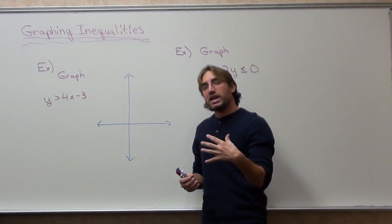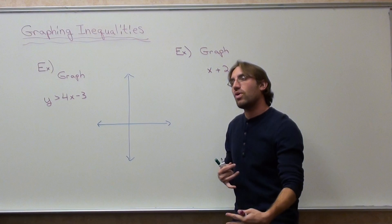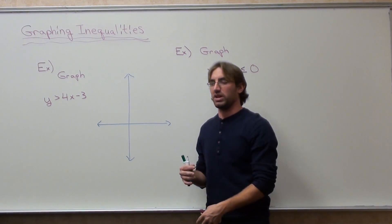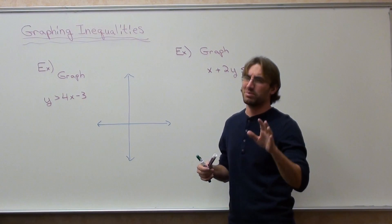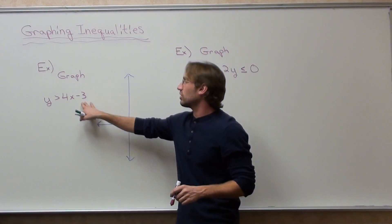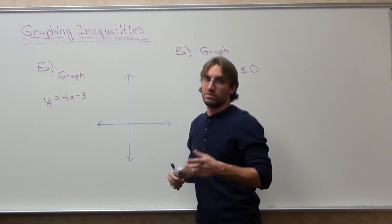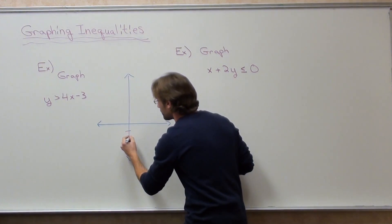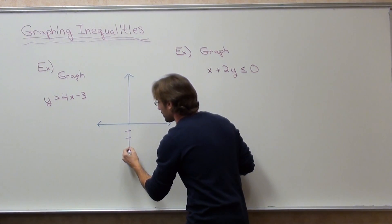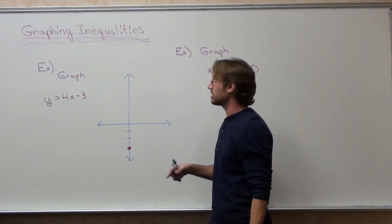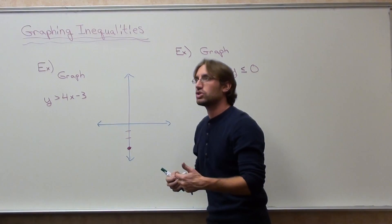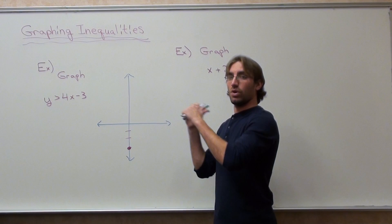The y-intercept of this problem works the same way as slope-intercept form. It's basically the same thing except there's shading at the end. We're going to plot the y-intercept first, which is negative 3. Then from the y-intercept, the slope is 4 over 1, so we're going to rise 4 over 1.